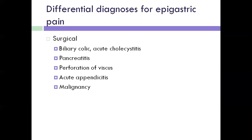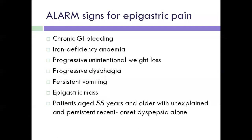Next, diagnosis. Epigastric pain is observed, and the epigastric surface can be diagnosed by different symptoms including pancreatitis, biliary colic, acute cholecystitis — which is obstruction and inflammation of the biliary tract — acute appendicitis, or malignancy. These are the alarming signs for epigastric pain.